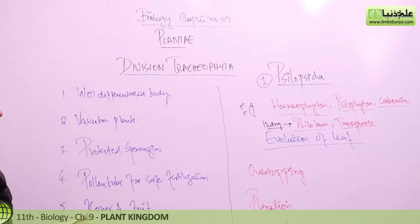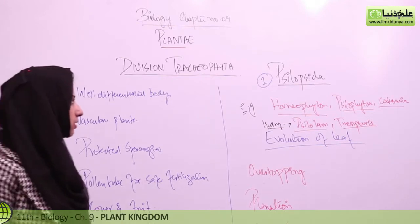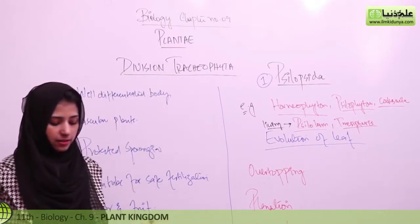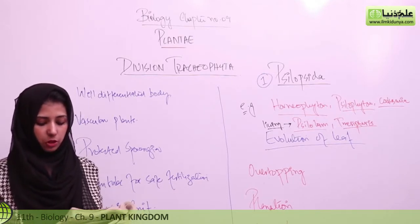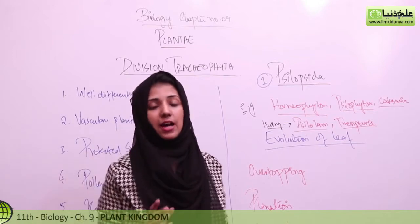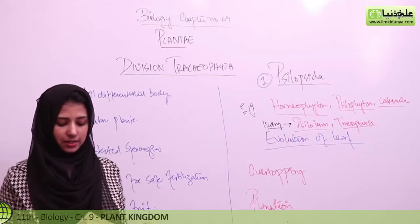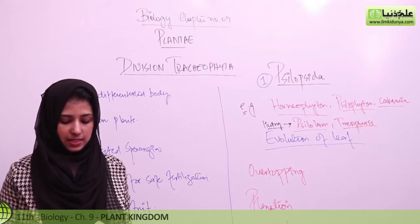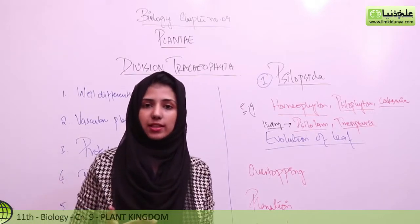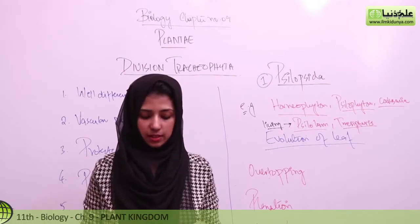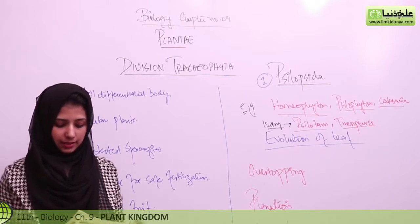Let's discuss the first subdivision of the division Tracheophyta. The example is the whisk fern — whisk fern is a common name. In Psilopsida, the sporophyte is independent and dominant. Plants have a rootless sporophyte. The stem is differentiated into an underground rhizome and an aerial part. The aerial branches are green, leafless, and bear small enations that carry out photosynthesis.